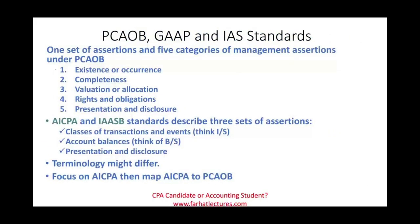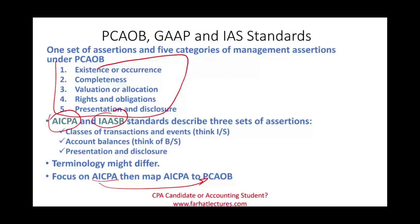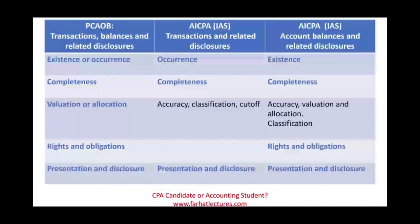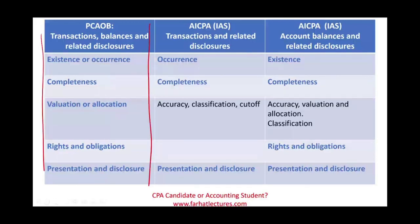Now we're going to map the AICPA to the PCAOB. Those are the PCAOB's five classes of assertion dealing with transactions, balances, and related disclosure. The AICPA breaks into transactions and related disclosure separately, and account balances and related disclosure — but basically the same.